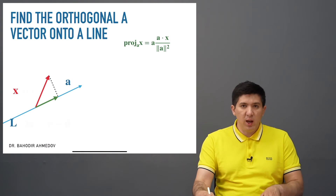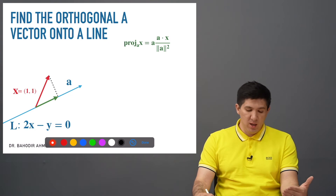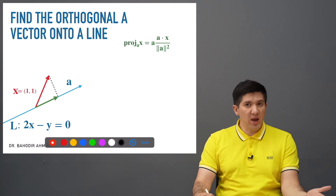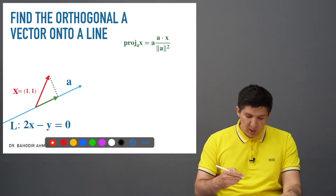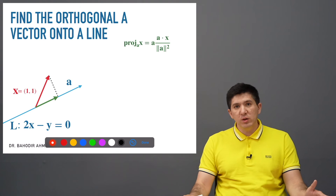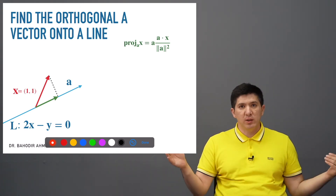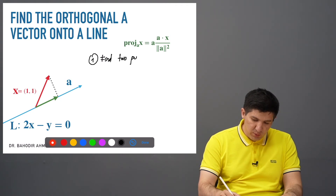Sometimes your line is not going to be given with a vector — you're going to be given the equation of a line instead. In order to find the projection of a vector onto this line, you first have to find a vector which is parallel to, or lying on, this line. What you need to do is essentially find two points on this line.